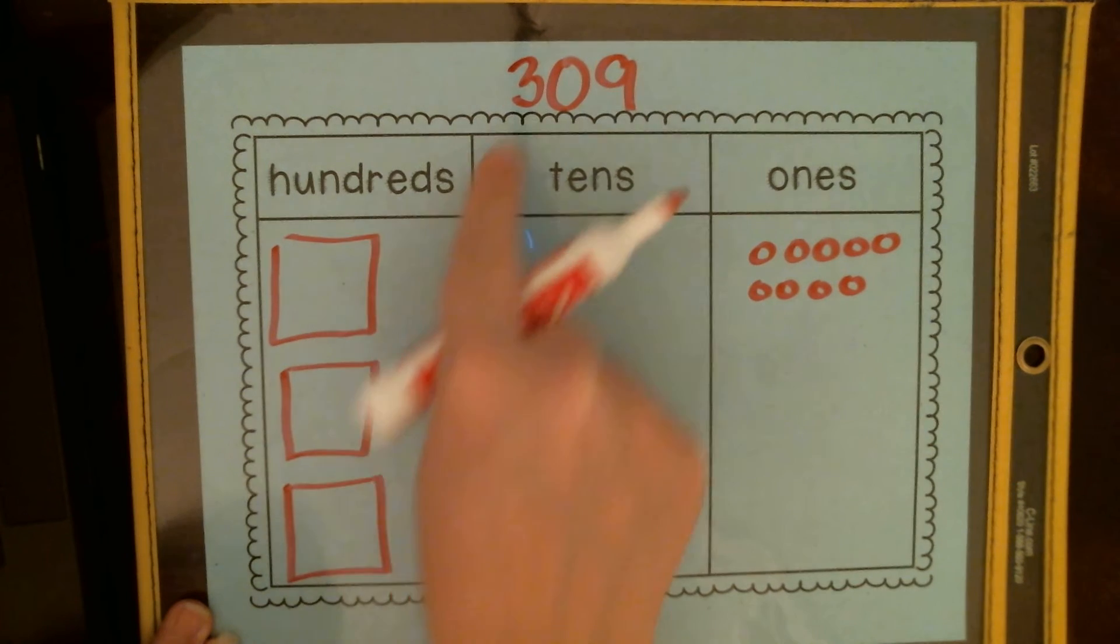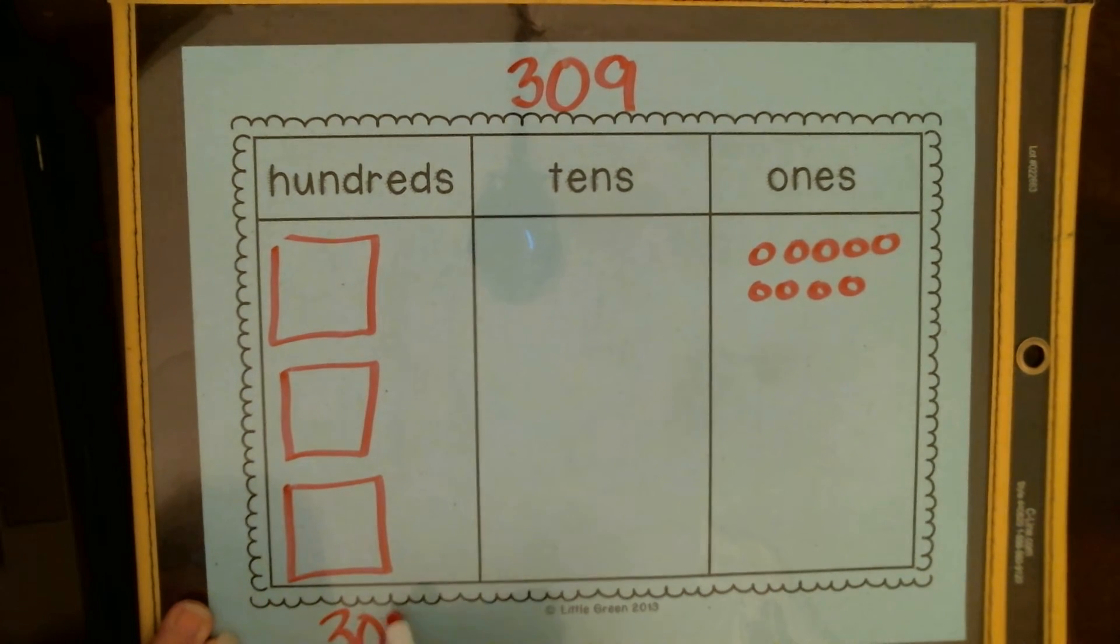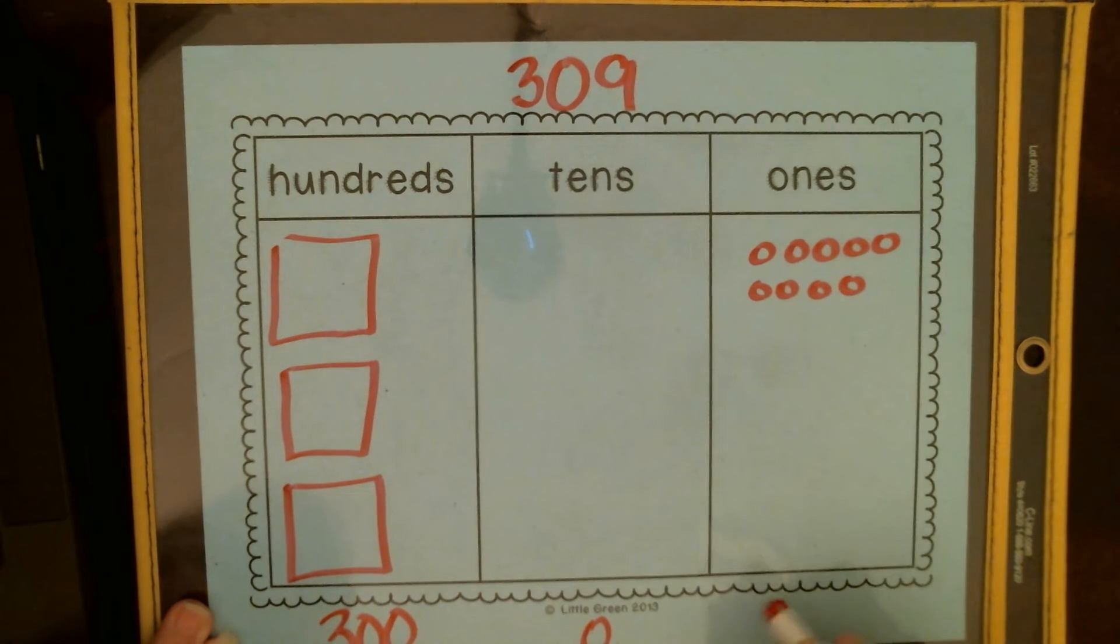So the value of that three, it's valued at 300, no tens, and nine ones.